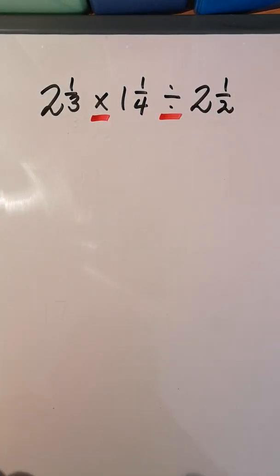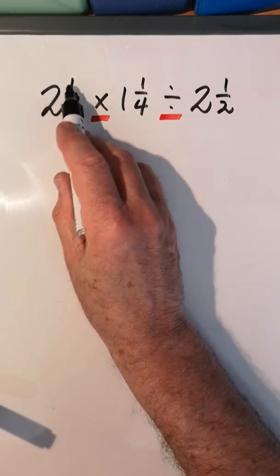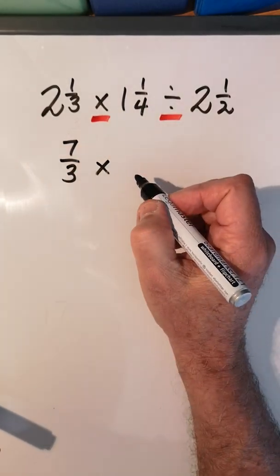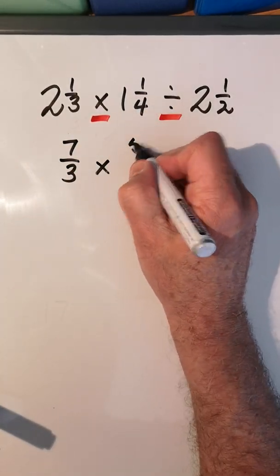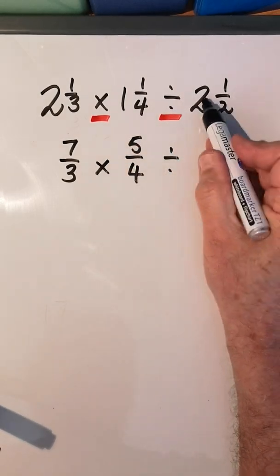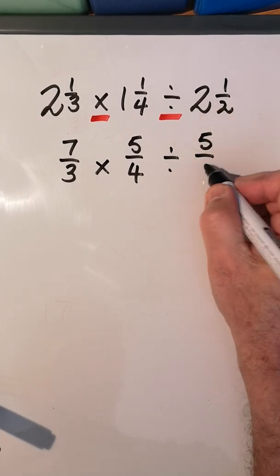all of those into improper fractions. We all know by now 3 × 2 = 6, plus 1 is 7 over 3. 4 × 1 = 4, plus 1 is 5 over 4. Divided by: 2 × 2 = 4, plus 1 is 5 over 2, denominator the same.